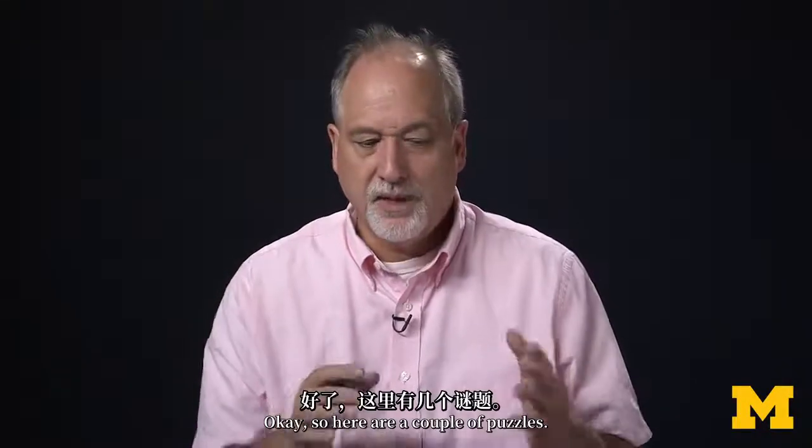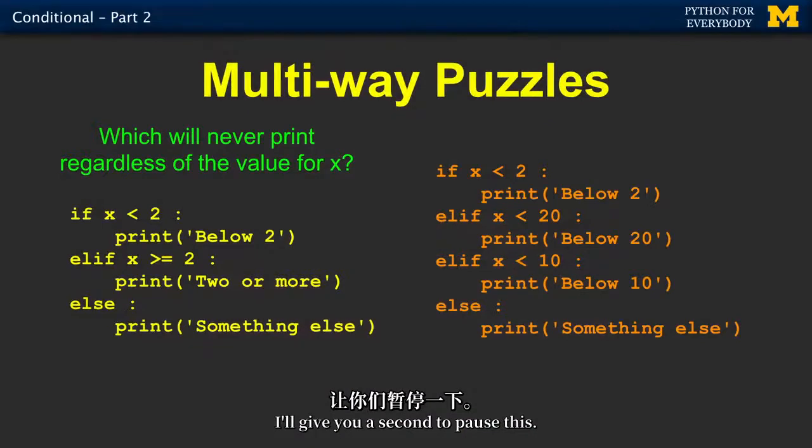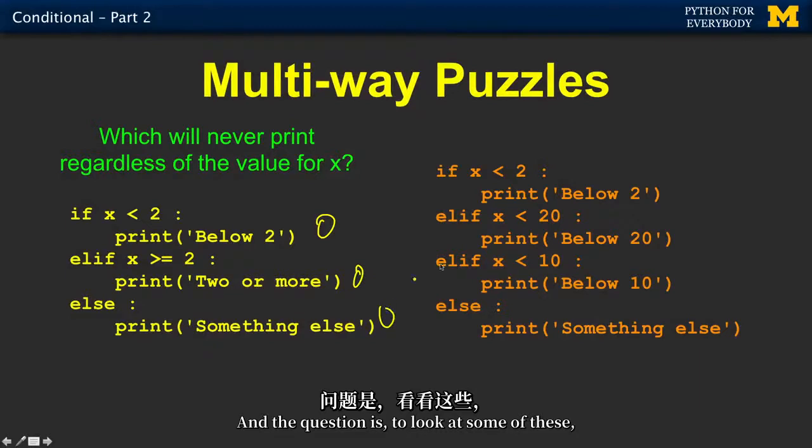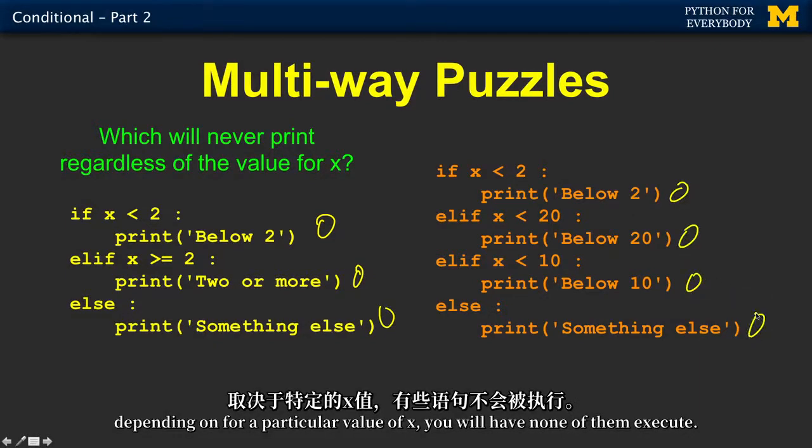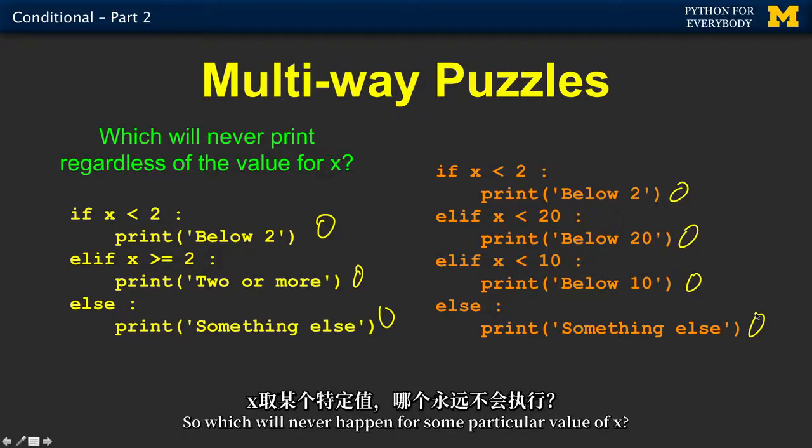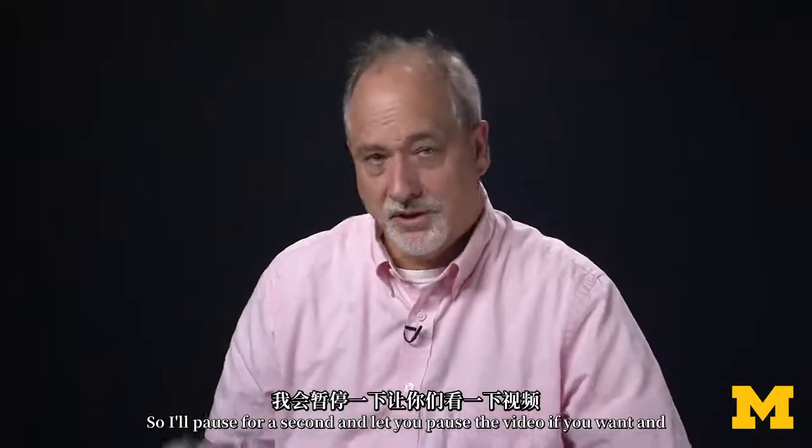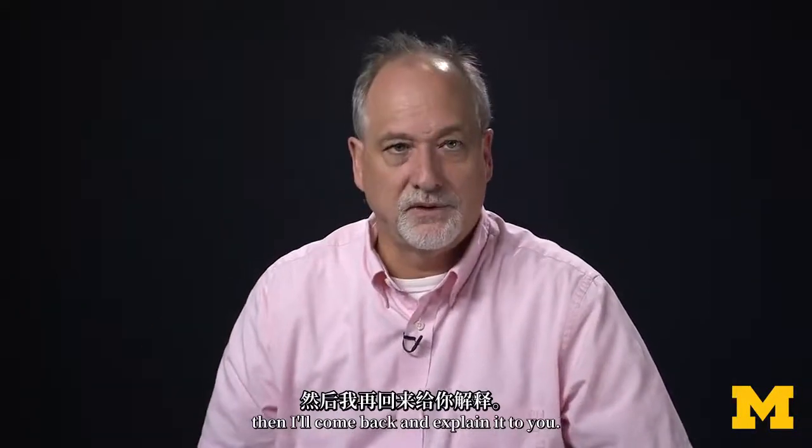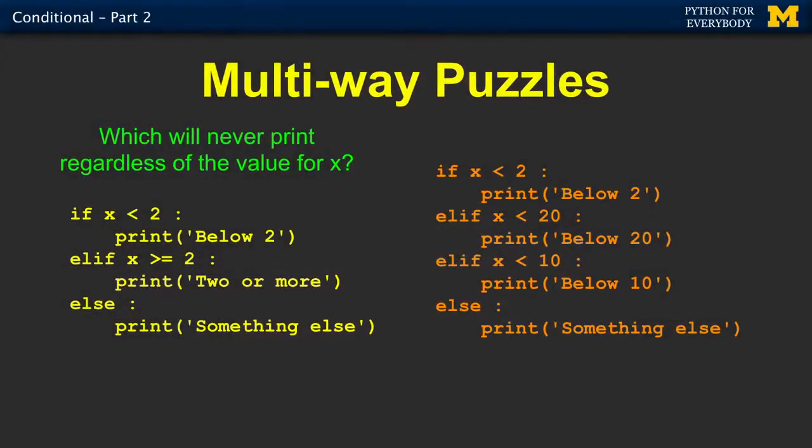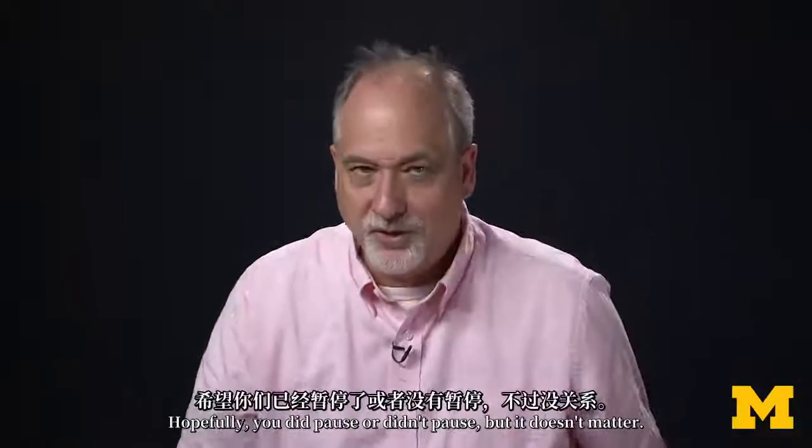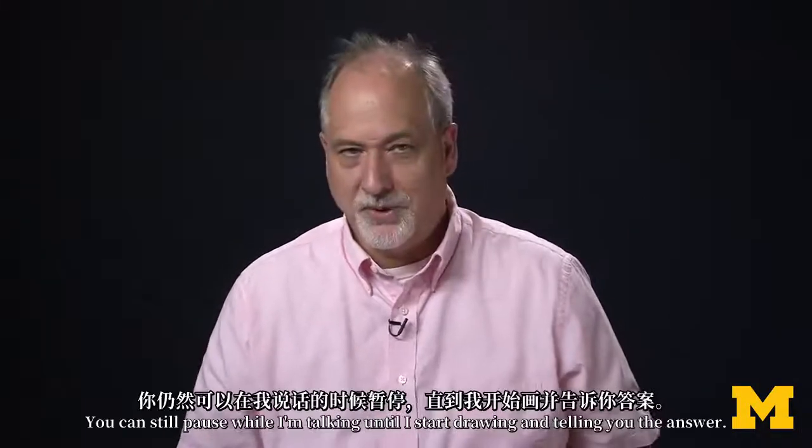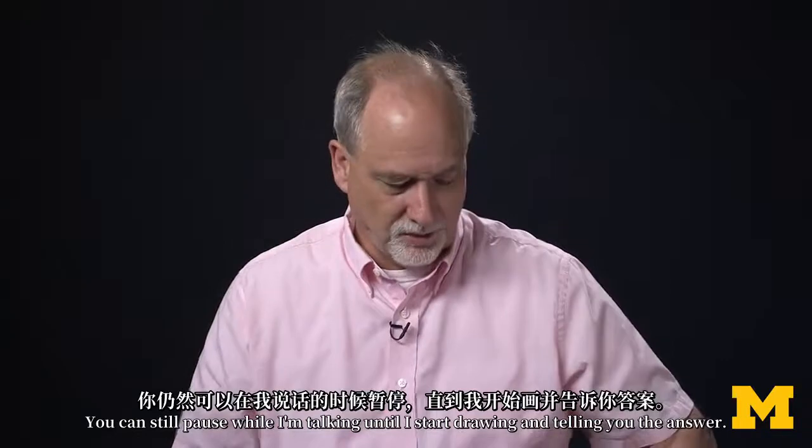Here are a couple of puzzles. The question is to look at some of these, depending on for a particular value of x, you will have none of them executed. Which will never happen for some particular value of x? Meaning you can pick any value for x you want, but there's some that you can't cause to execute. So I'll pause for a second, let you pause the video if you want, and then I'll come back and explain it to you.